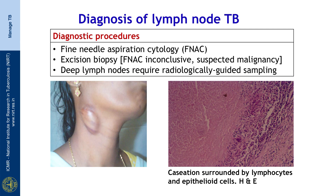For lymph node tuberculosis, FNAC — fine needle aspiration cytology — should be done and this sample should be sent for GeneXpert MTB/RIF, smear, culture and cytology. If the FNAC is inconclusive, especially when we are thinking of malignancy, excision biopsy should be done. For mediastinal lymph nodes, we can do bronchoscopy-guided transbronchial needle aspiration or endobronchial ultrasound. There may also be deep-seated lymph nodes which may require radiologically guided sampling.